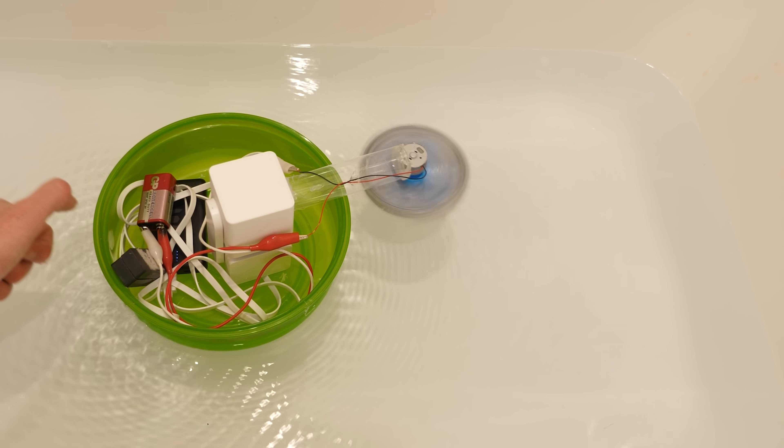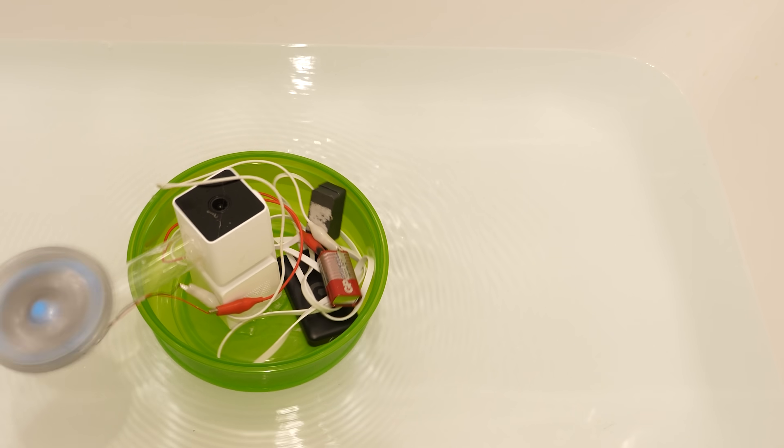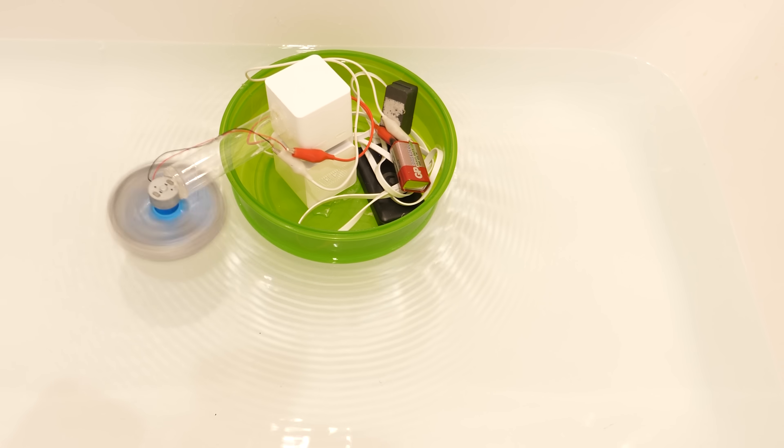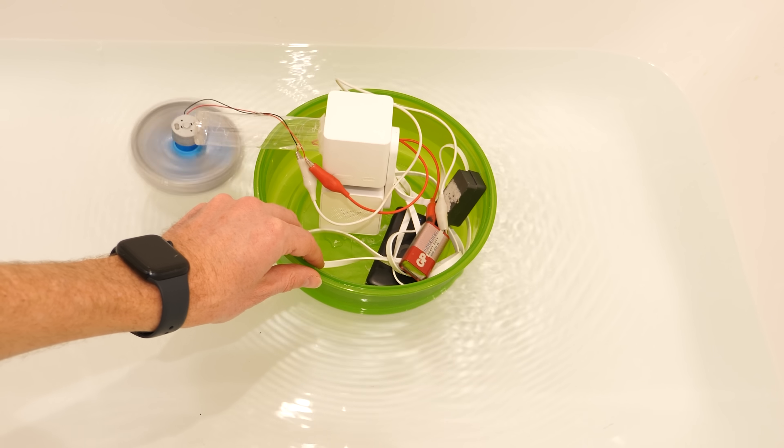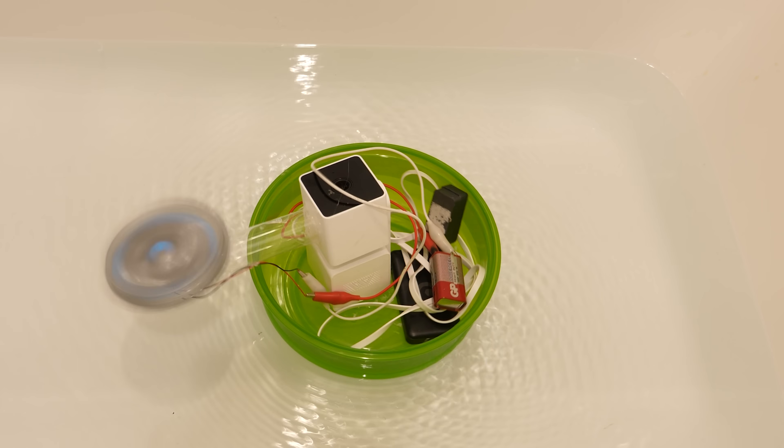But now watch what happens when I suddenly reverse the direction of the spinning blade. To compensate for this and keep total angular momentum conserved, the boat must start spinning in the opposite direction. And if I flip the blade back, then the boat stops again. This is so cool to see. This same principle applies to electrons.